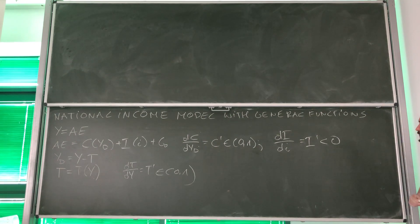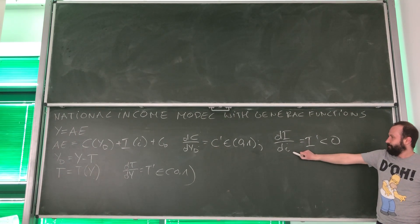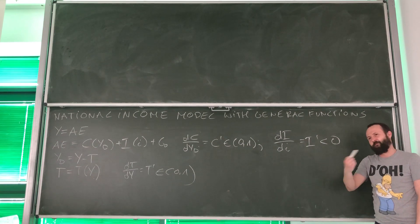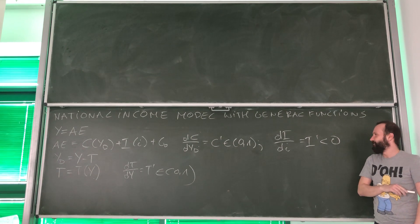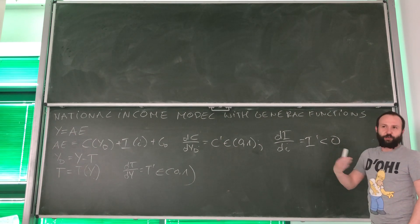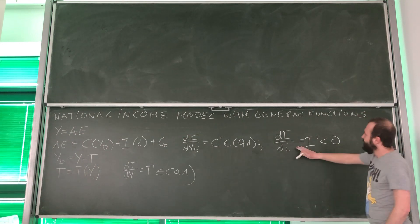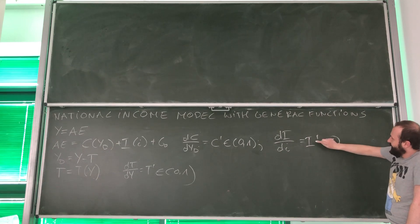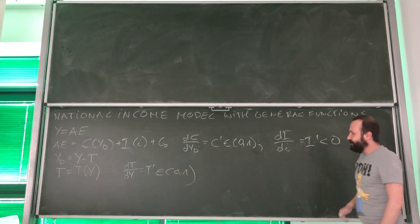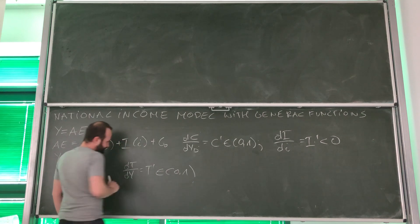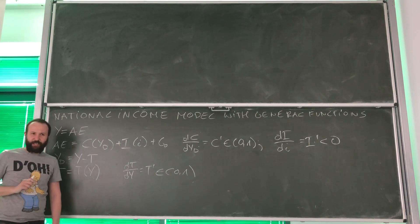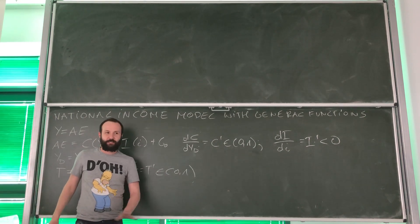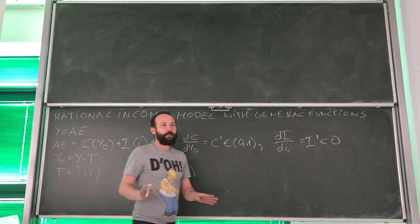The second thing we know is that the higher the interest rate, the lower the investment — the higher the cost of obtaining capital to purchase investment goods. Because of that, investment's derivative with respect to the interest rate is negative, denoted I prime. Finally, the derivative of taxation with respect to income is the tax rate, which must be between 0 and 1. This is all we know.